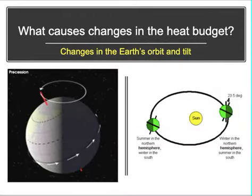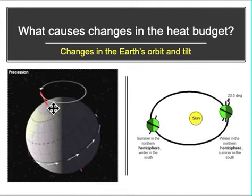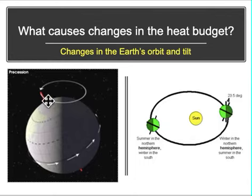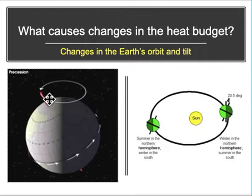Another factor is that our Earth is tilted on its axis, and this axis points sometimes toward the sun — giving us summertime — or away from the sun, giving us wintertime. Although the tilt stays at 23 degrees, the axis wobbles around, kind of like a spinning top. That wobble can cause slight changes in the amount of heat coming into the Earth.